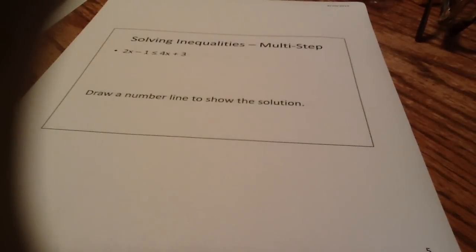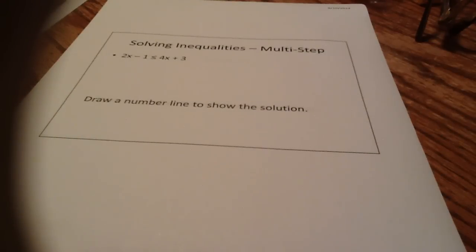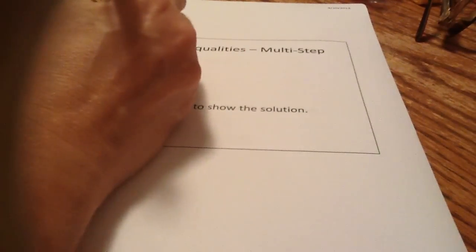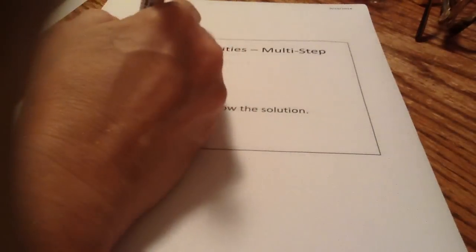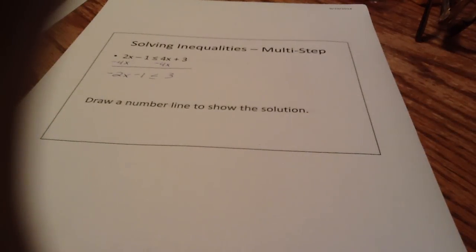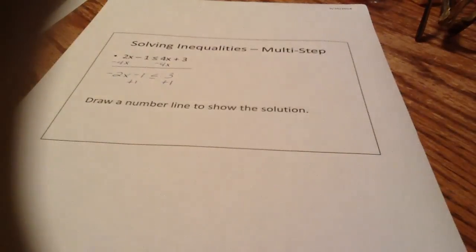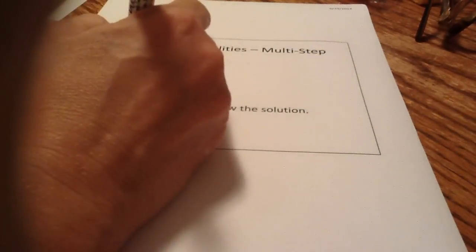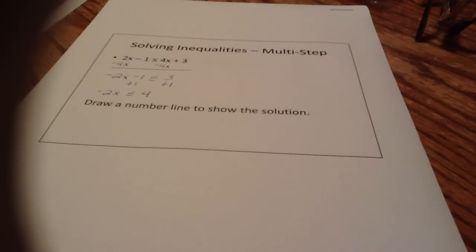Now let's look at solving inequalities with multi-steps. You'll notice there's an x on both sides of the inequality, so we need to get the x's on the left and the constants on the right. I'm going to subtract 4x from both sides, which gives me negative 2x minus 1 is less than or equal to 3.